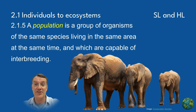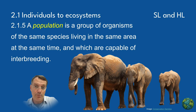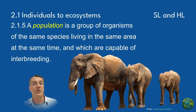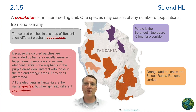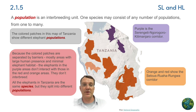Moving up from individual organisms, we encounter populations. A population is a group of organisms of the same species living in the same place at the same time and capable of interbreeding. Consider African elephants as an example. While they're the same species, different populations exist in various locations across their range, separated by geographical barriers or human development.